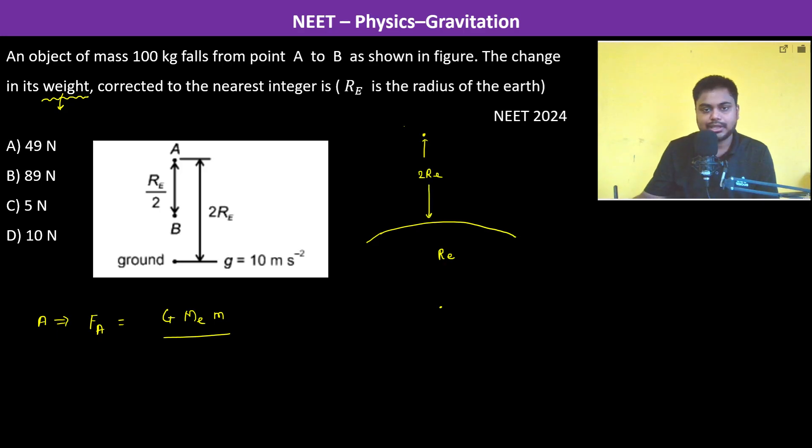At A, therefore it becomes 3Re whole square. At B, the force at B is going to be—B is Re/2 lesser, so therefore this becomes 2.5Re whole square.